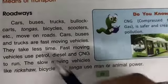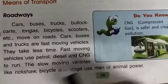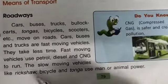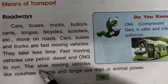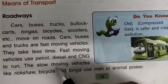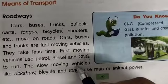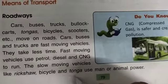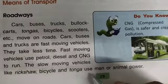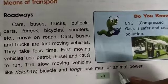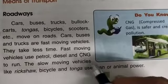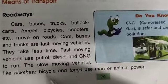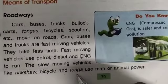Fast-moving vehicles use petrol, diesel, and CNG to run. Slow-moving vehicles like rickshaws, bicycles, and tangas use man or animal power. Whether it is a rickshaw, bicycle, or tanga, they are all powered by man or animal power.